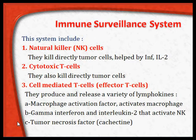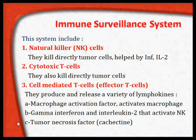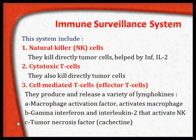These effector T cells can also produce what is called the tumor necrosis factor, also called cachectin. This tumor necrosis factor is a chemical substance which will kill the tumor cells. In addition to these three mechanisms, there is an antibody-mediated mechanism of immune surveillance through our B cells, which we will see in the next slide.